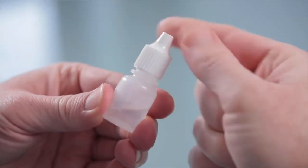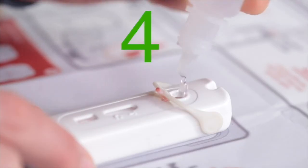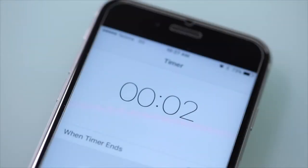Now add four drops of test fluid into the well on top of the blood. Set your timer and wait 15 minutes before reading the result. Reading the result before 15 minutes could give you a false result. However, do not wait longer than 20 minutes.